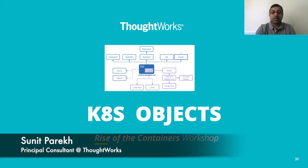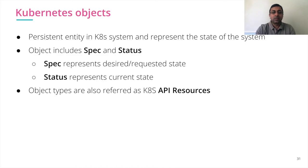To learn more about Kubernetes, let's look at Kubernetes objects. Kubernetes objects are persistent entities in the Kubernetes system that represent the state of the system. The object includes spec and status. The spec part represents the desired or requested state, and status represents the current state.